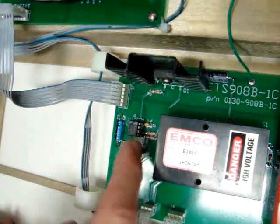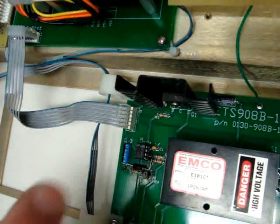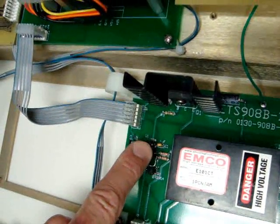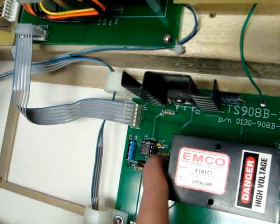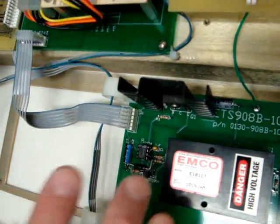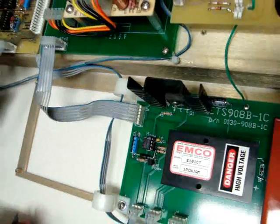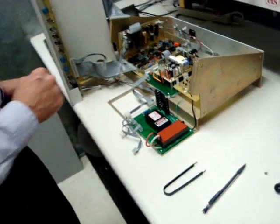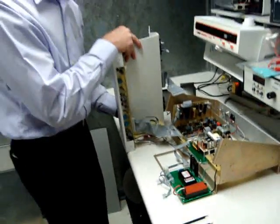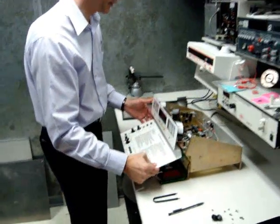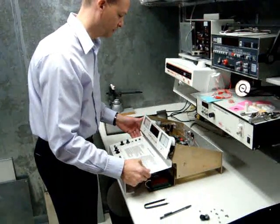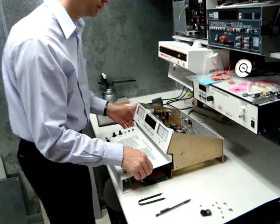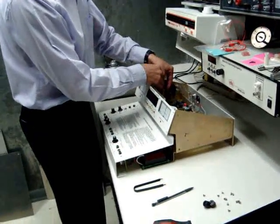Before you insert it, make sure all the legs are right over the socket, so it goes in smoothly. Make sure none of the legs are sticking out or bent under. Now, we're going to replace the front panel. Carefully, turn them down again. Be careful of your cables.